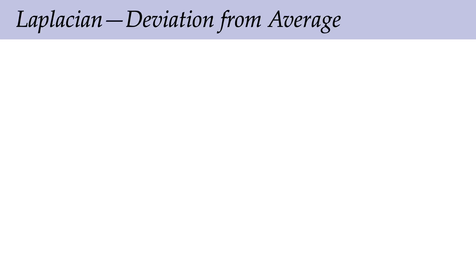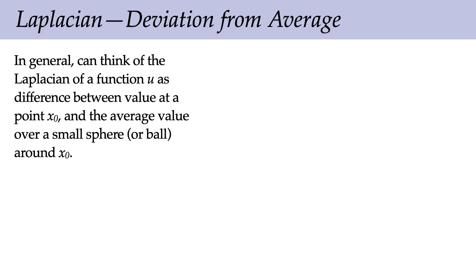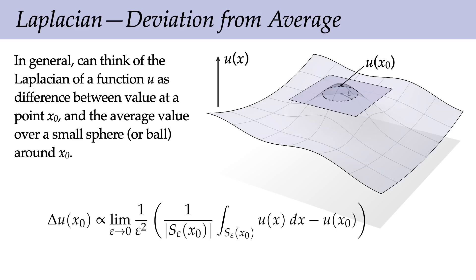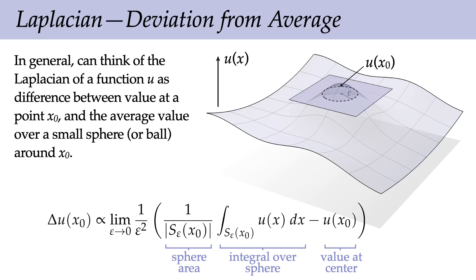The same idea works for functions of multiple variables. The Laplacian at a point x₀ is proportional to the limit as ε goes to zero of the integral of u over the sphere of radius ε around x₀ divided by the area of that sphere, minus the value at the center. So the Laplacian is the deviation from a local average—the same key idea as the graph Laplacian.